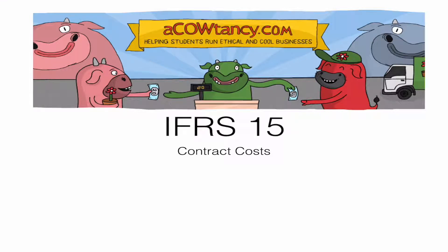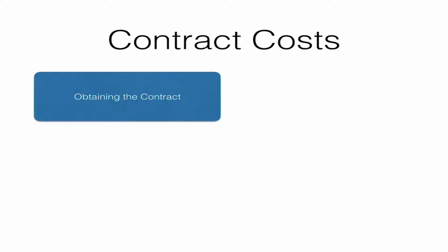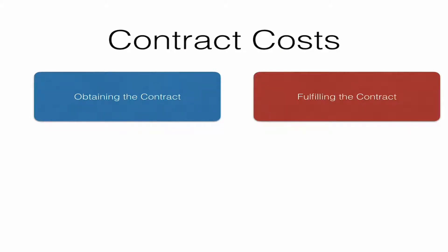Let's have a look at contract costs. Contract costs can basically be split up into the cost that you get when you try to obtain a contract, and the cost that you get when you're actually fulfilling the contract. Both of them you should put to the SFP — you should capitalise them. But always make sure these costs aren't under a different standard, like PPE or whatever it might be.